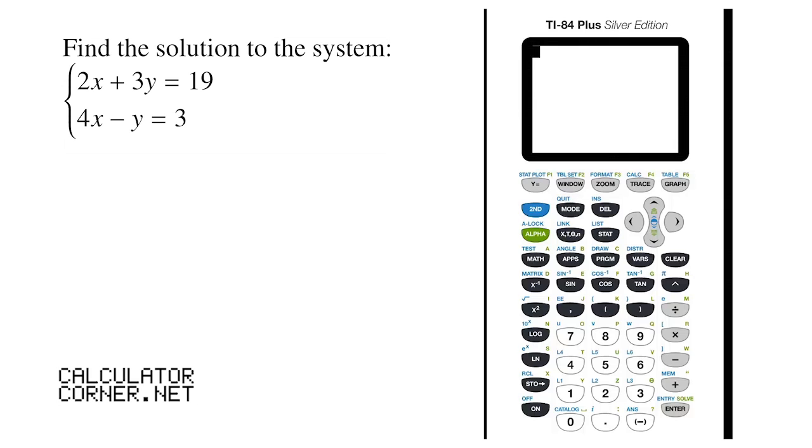So the matrix is 2, 3, 19, 4, negative 1, and 3.